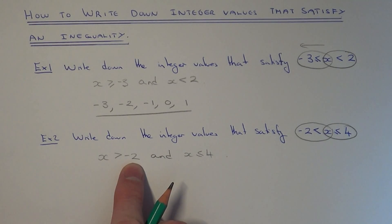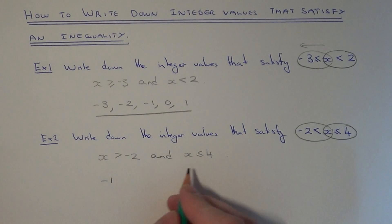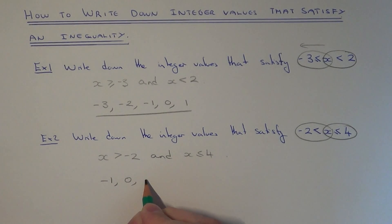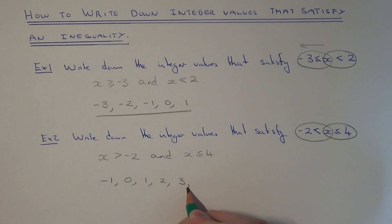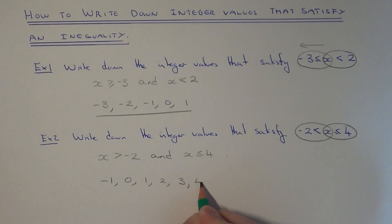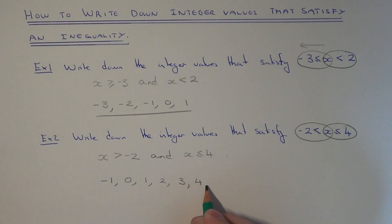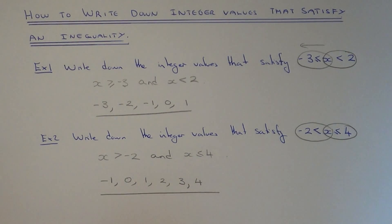Our first value which is more than minus 2 would be minus 1. If we keep going upwards on our number line, we can include 4 this time, because x is less than or equal to 4. So these are our integer values which satisfy the inequality.